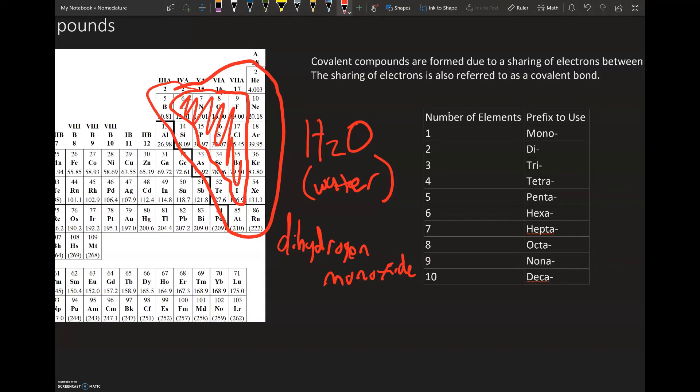The prefixes help us to understand in that formula how many hydrogens there are and how many oxygens there are. When I look at this and say we have dihydrogen monoxide, in my mind I see two hydrogens and one oxygen.